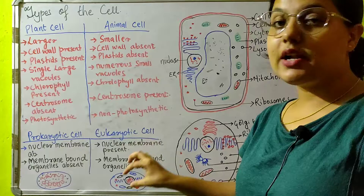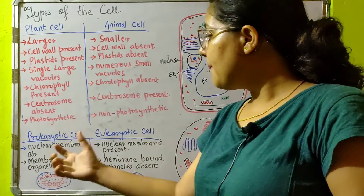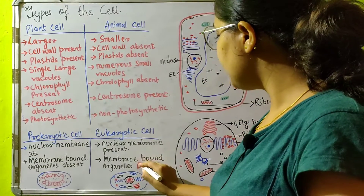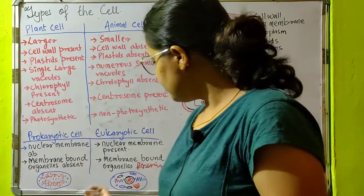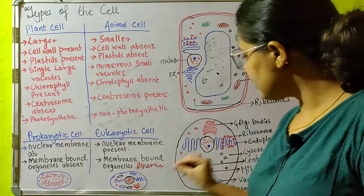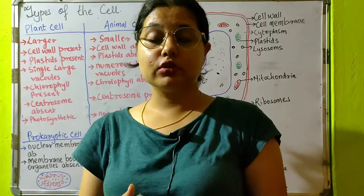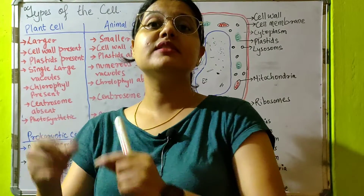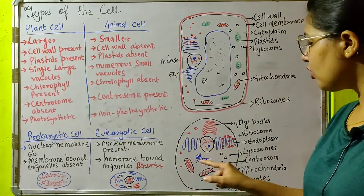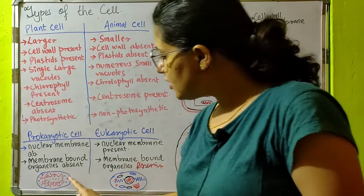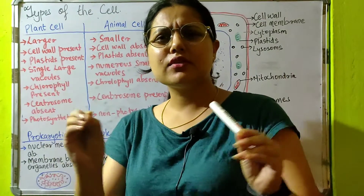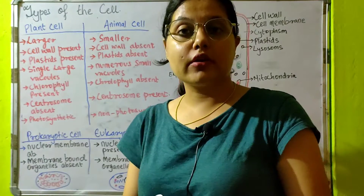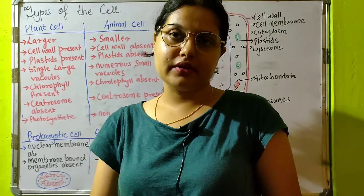That is the main key difference: because there is no nuclear membrane, genetic material is scattered all around the cell. But where a nuclear membrane is present, genetic material is concentrated at the center. The second difference is that membrane-bound organelles are absent in prokaryotic cells and present in eukaryotic cells. In prokaryotic cells, the organelles are very small, scattered all around, and do not have a definite shape or structure.